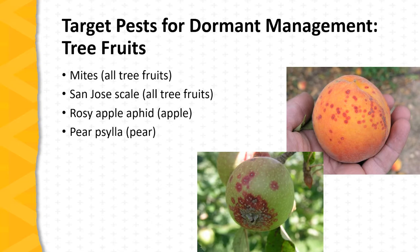The next series of slides will discuss the arthropod pests and disease issues that are vulnerable to management during the dormant season. Let's start with tree fruits and arthropod pests. First of all, mites can be a problem on all fruit trees, and dormant season control can be quite effective against mites, particularly the overwintering stages. San Jose scale and other pests across many types of tree fruits are effectively managed by a dormant season application of pesticide, which targets the adult overwintering stage of the insect.